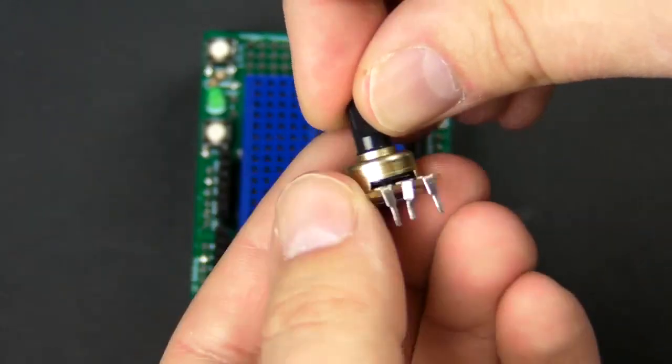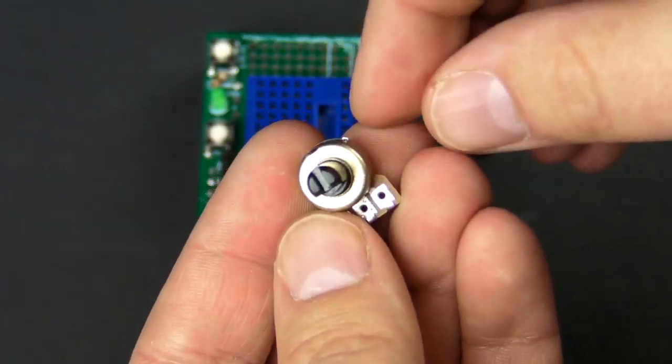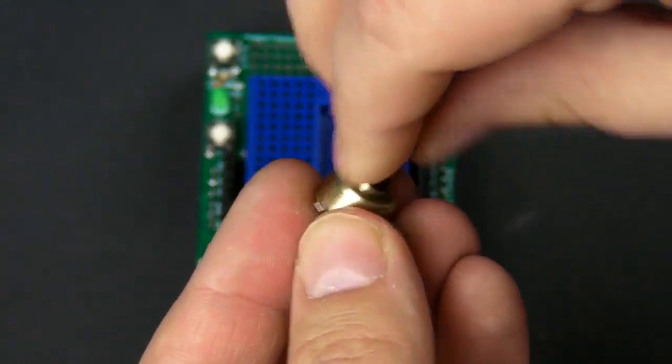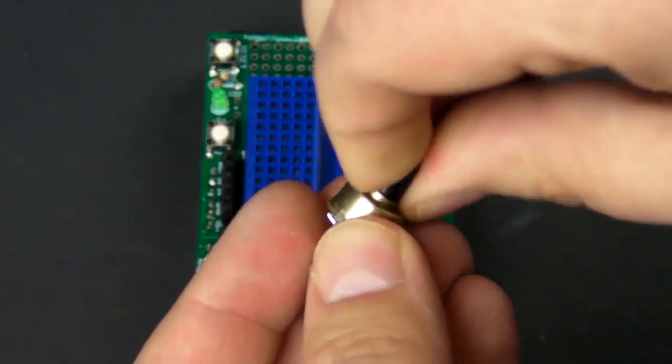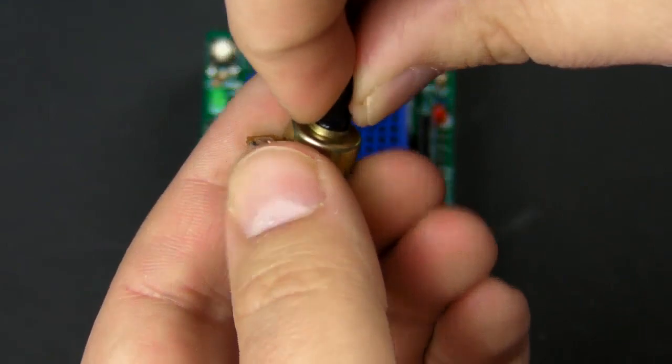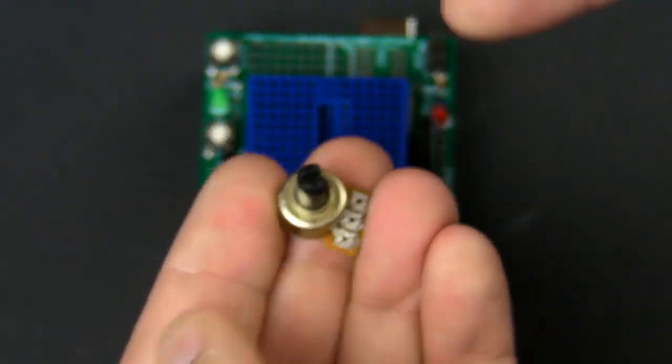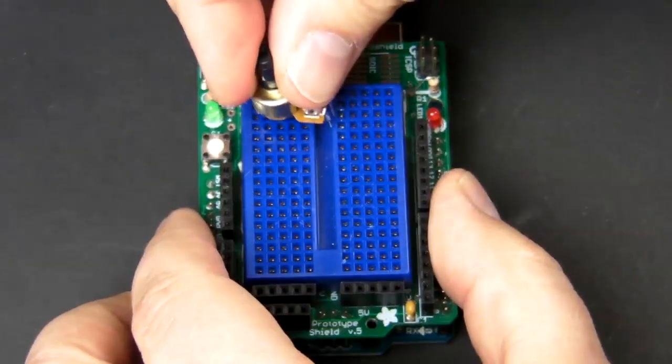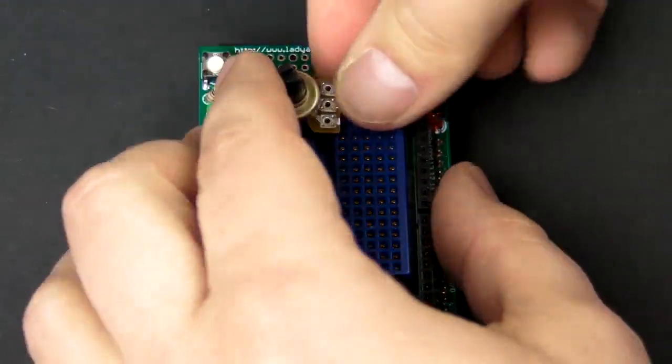The middle pin is going to be connected to analog pin zero on the Arduino. Basically, what a potentiometer is is a variable resistor. We can vary the voltage through the middle pin and the Arduino can translate that into a series of digital signals to control the servo. So let's go ahead and hook that up. I'm going to push it into the breadboard.